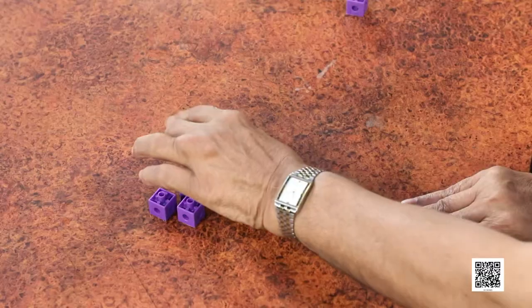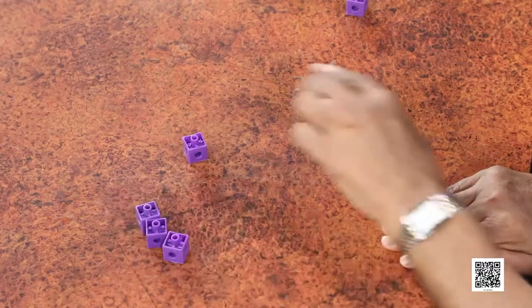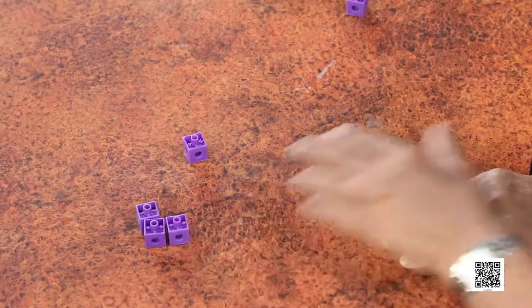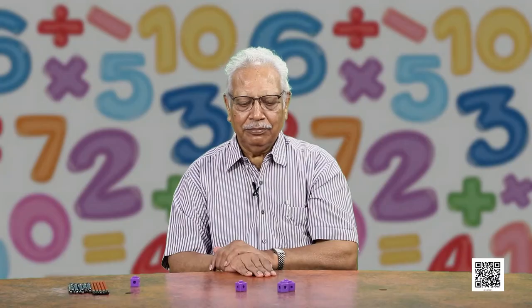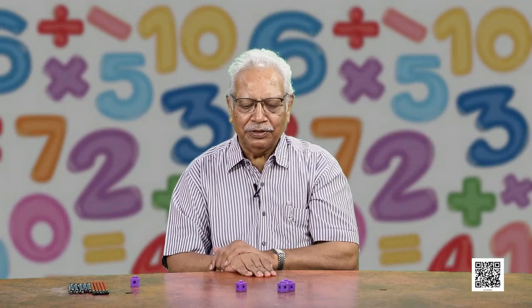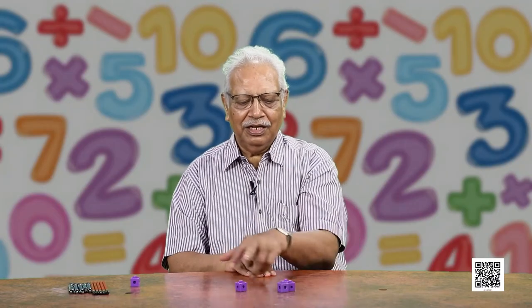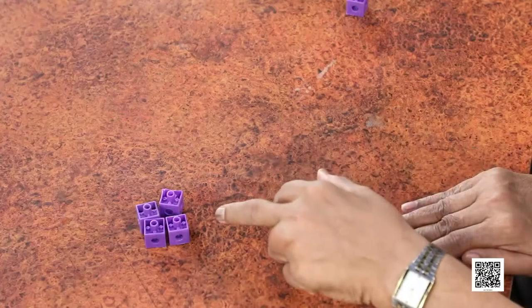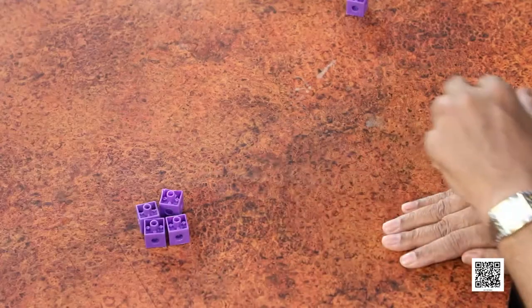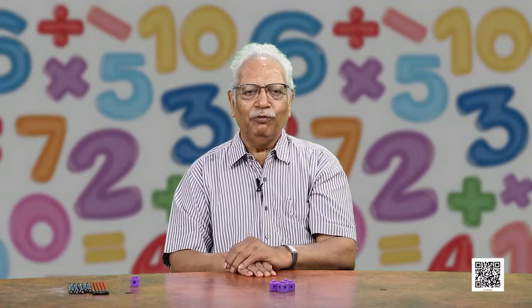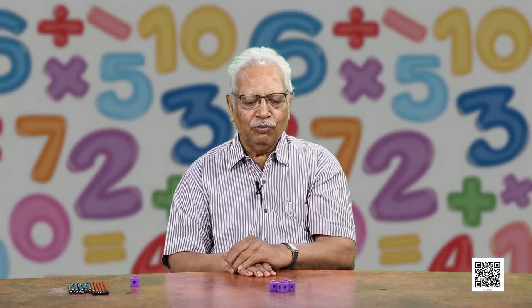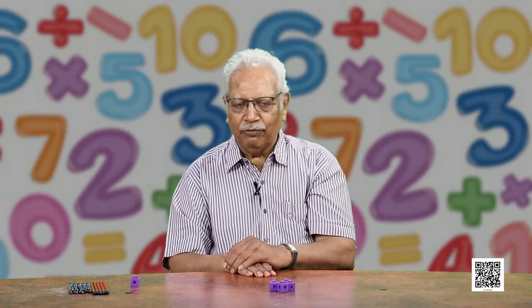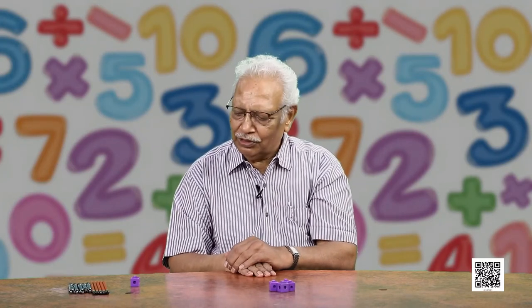Similarly, if I add 1 to these 3, then what happens? You can count again: 1, 2, 3, 4. So they make 4. So, 3 and 1 make 4.